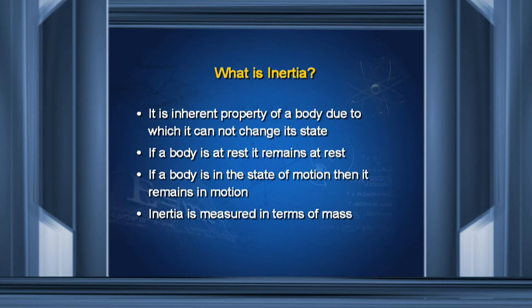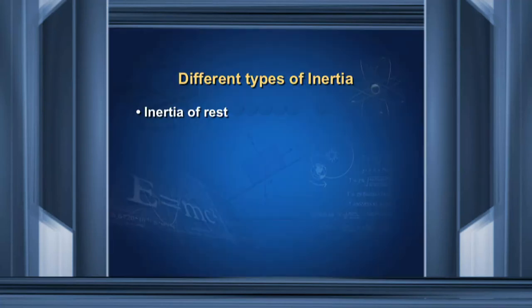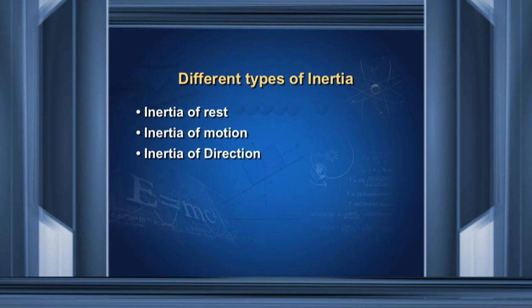Inertia is measured in terms of mass — more is the mass, more will be the inertia. There are three types of inertia: number one, inertia of rest; number two, inertia of motion; number three, inertia of direction. Let us study them one by one.